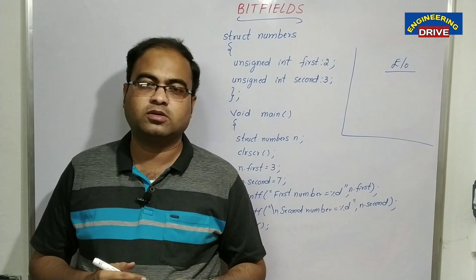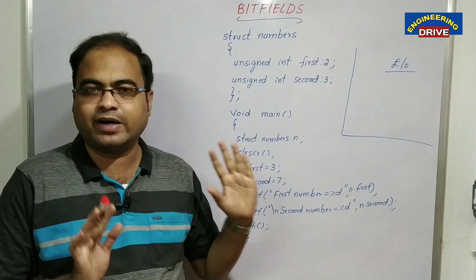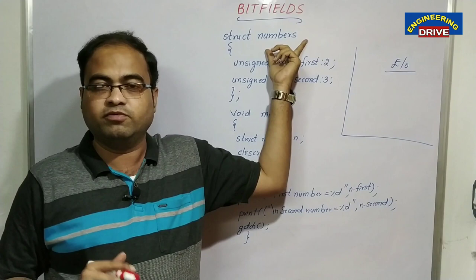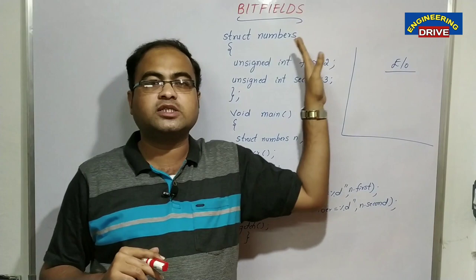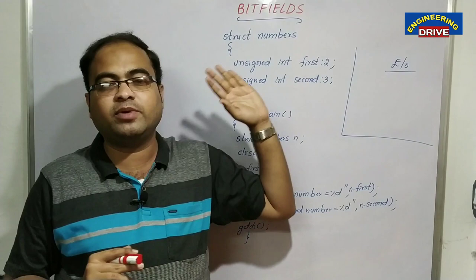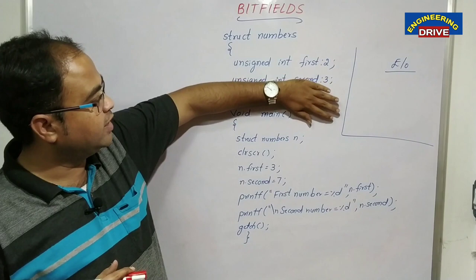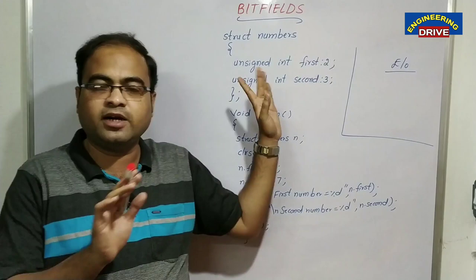So what is the bit field and why is this bit field topic used? I have written one program related to structure. You can see the keyword struct, so I have declared one structure in my program. The name of this structure is "numbers", which means I want to assign values for two numbers. The two elements of the structure are "first" and "second". I have also declared one variable n which belongs to the structure numbers.